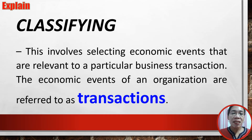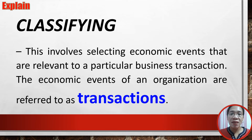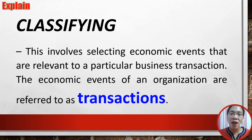Classifying involves selecting economic events that are relevant to a particular business transaction. The economic events of an organization are referred to as transactions. For example, in a bakery business, economic events include sales of bread and other bakery products, purchases of flour that will be used for baking, and purchases of trucks needed to deliver the products. Those are examples of economic events or transactions that are recordable.